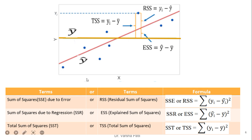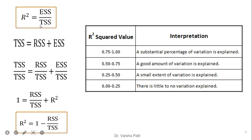In my previous video, I have already explained R-squared and its formula in detail. Two types of notations are used in literature: RSS, ESS, TSS, or equivalently SSE, SSR, SST. TSS is the difference between the actual value and the average value; RSS is the difference between the actual value and the predicted value; and ESS is the difference between the predicted value and the average value. TSS equals RSS plus ESS, and R-squared equals ESS divided by TSS, which can also be written as 1 minus RSS divided by TSS.